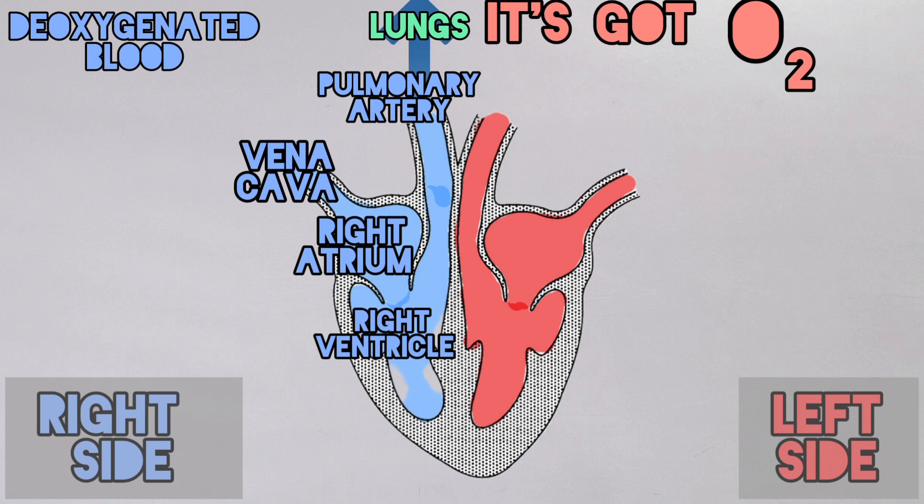Now back to the heart again, this time through the pulmonary vein. Now the left side pumps way stronger and sends blood to the body out the aorta.